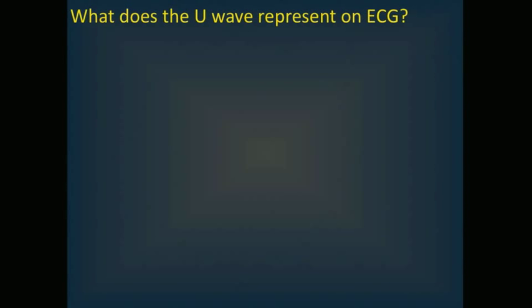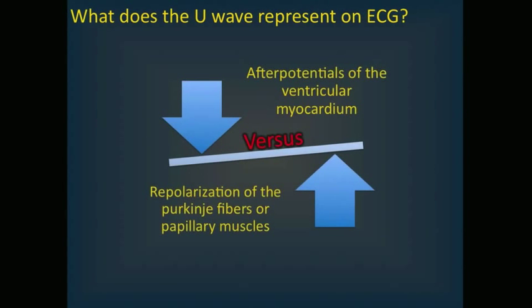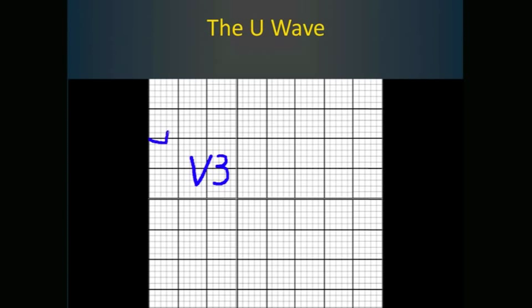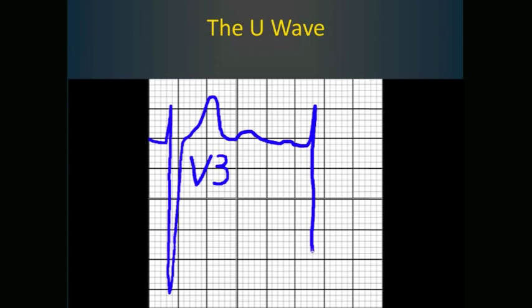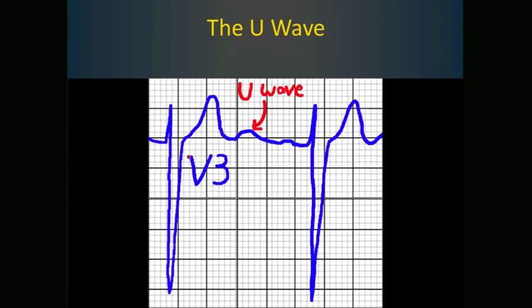What does the U-wave represent on ECG? Controversial in origin, the U-wave is thought to represent either after-potentials of the ventricular myocardium or repolarization of Purkinje fibers. U-waves are rarely seen when the heart rate exceeds 90 beats per minute, usually because they get buried in the preceding T-wave, so don't look for them in tachycardic patients. U-waves are usually tallest in V2 and V3.